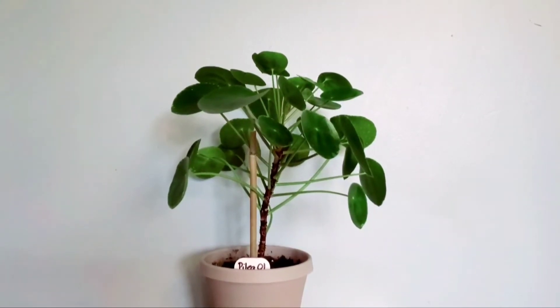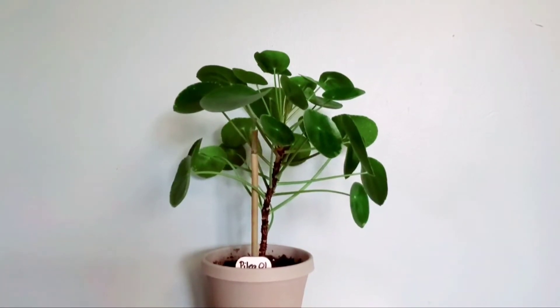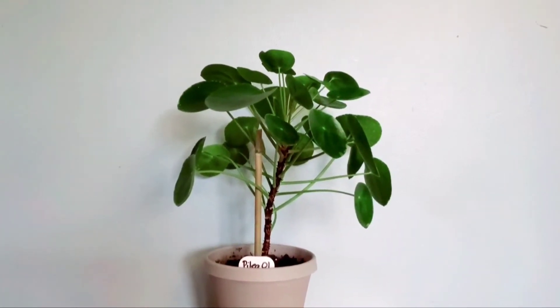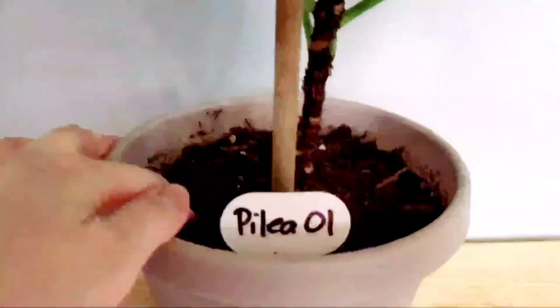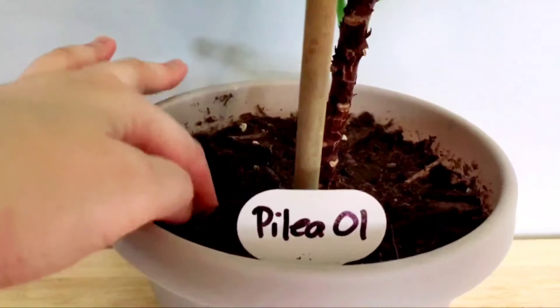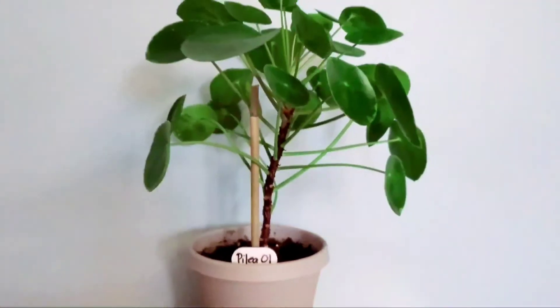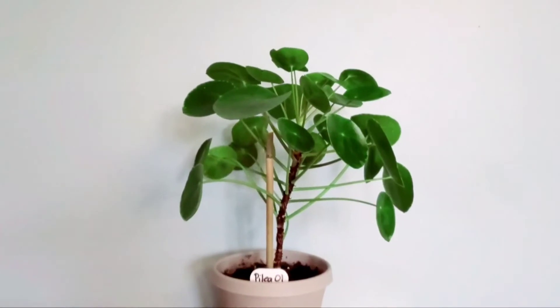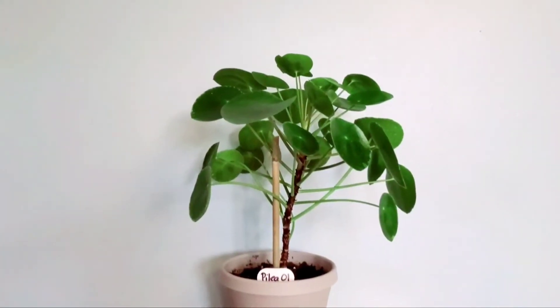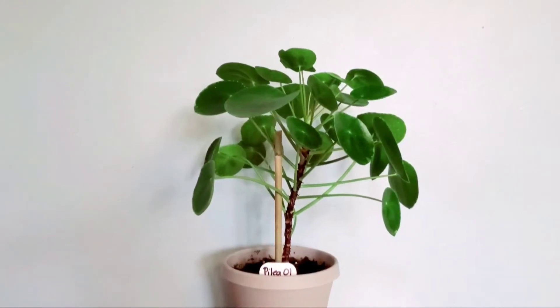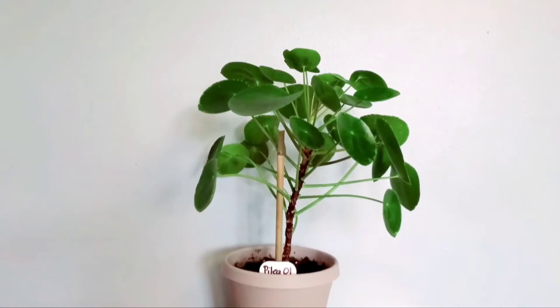Now before, a lot of people have mentioned that you shouldn't get the soil to dry out because it will kill the plant. Not really true. What I have noticed is she prefers to be more on the drier side. So what I do is I wait about half an inch to an inch, and she's dry on the late spring up to early fall.